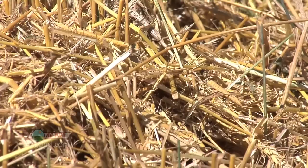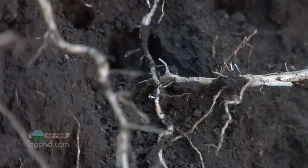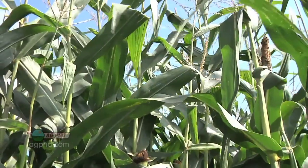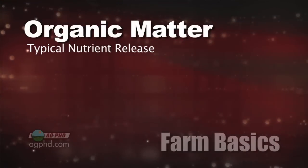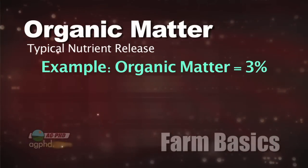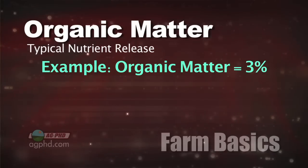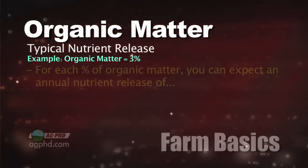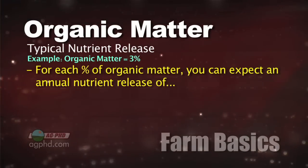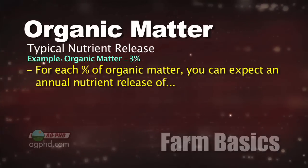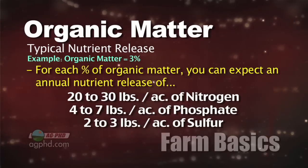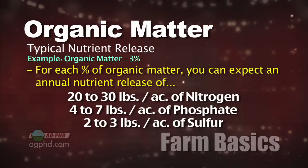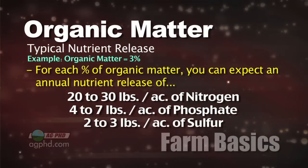Let's keep this simple. With that organic matter — the decaying plant and animal residue that's in the ground — when that decays, it actually releases nutrients for future crops. Here's the general range of what a farmer can get. If the farmer has an organic matter percentage of, let's call it 3% in his soil, for every percent of organic matter he's got, he's going to get roughly 20 to 30 pounds of nitrogen each and every year for free, released from that organic matter, 4 to 7 pounds of phosphate, and 2 to 3 pounds of sulfur.